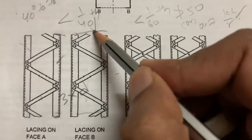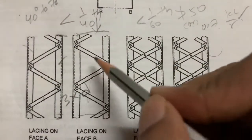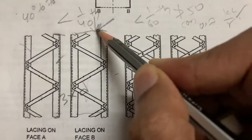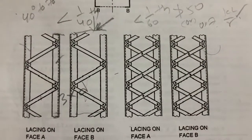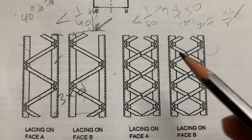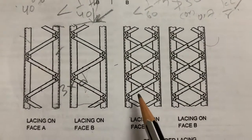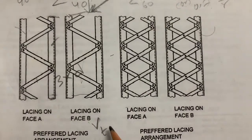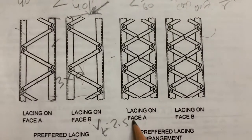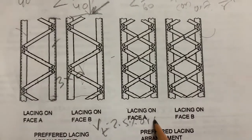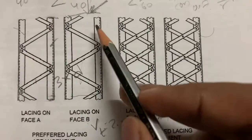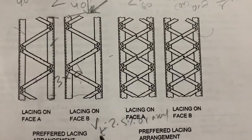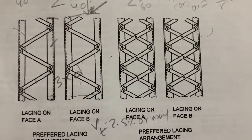Since the lacing is inclined, transverse shear will occur in the column. For the transverse shear, the code specifies that Vt equals 2.5 percent of the axial load in the column.